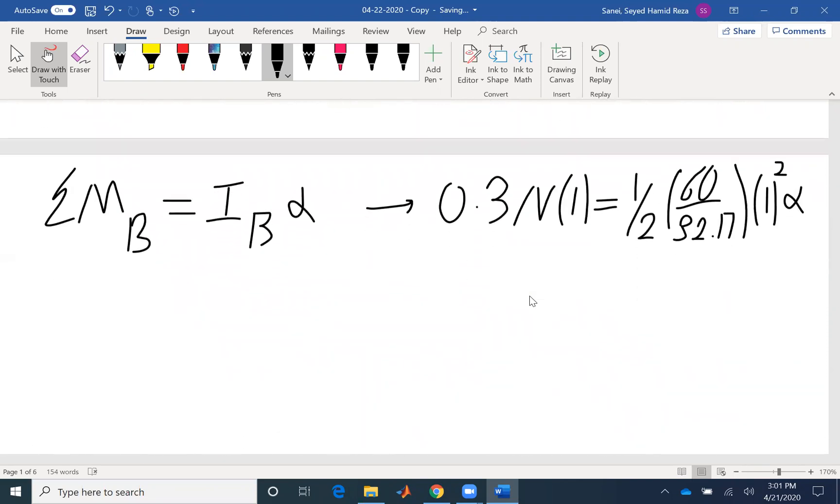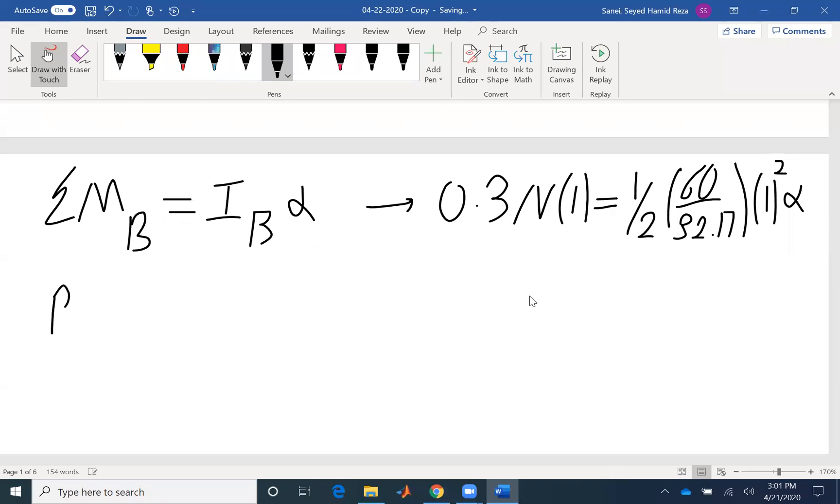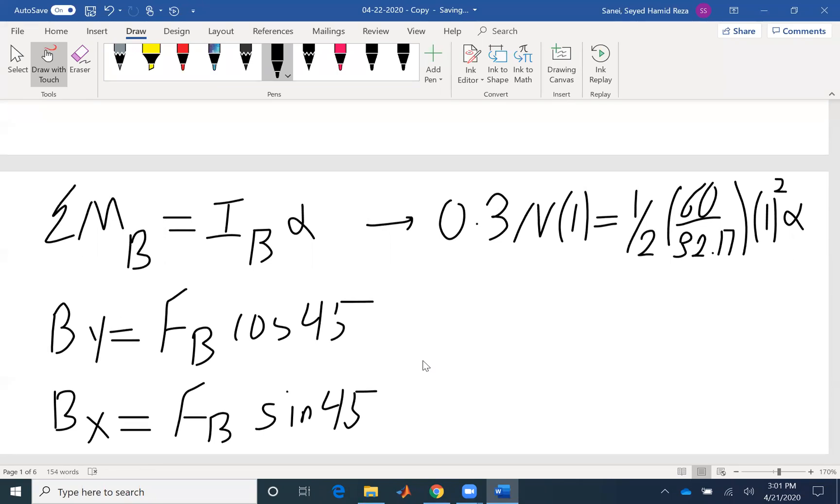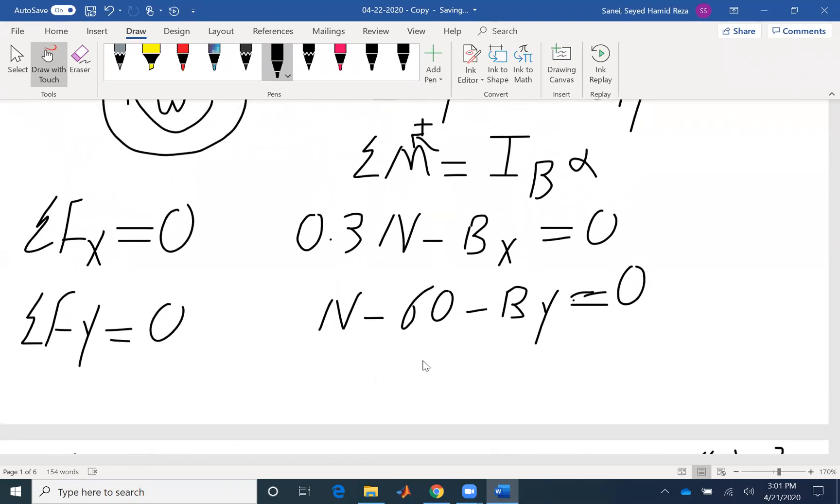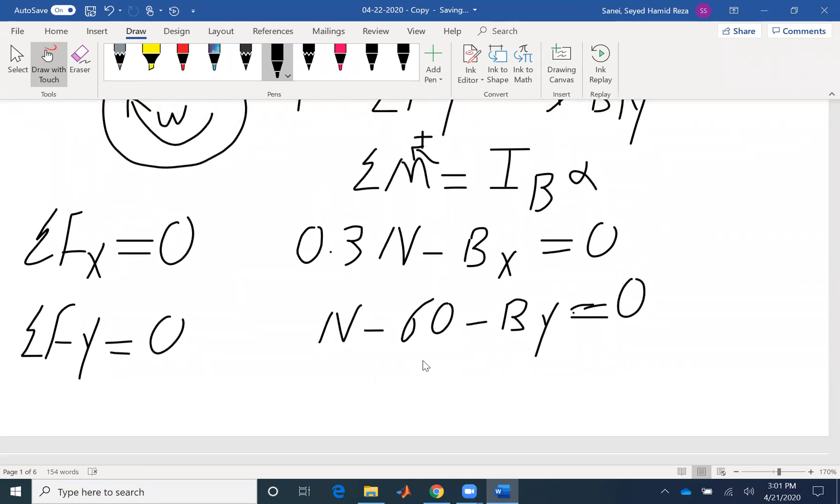If I write it here, BX equals FB·cos(45°). It really doesn't matter which one is cosine and which one is sine. If I replace BY and BX in these two equations, they represent only one unknown based on FB.